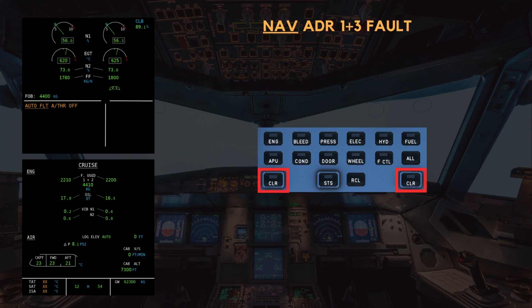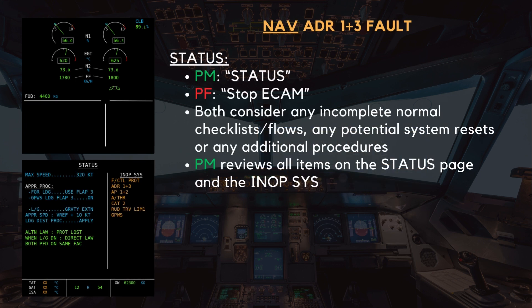Autoflight: autothrust off. "Clear autoflight?" — "Clear autoflight." Status — stop ECAM. At this point, both crew members consider any normal checklists or incomplete flows, any potential system resets, or any additional procedures that are applicable. Maximum speed is 320 knots.